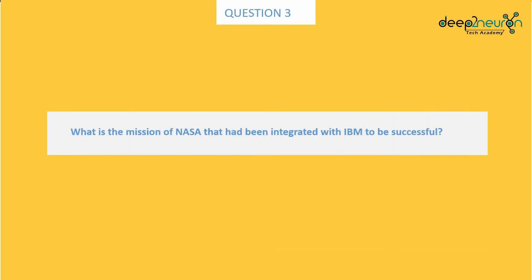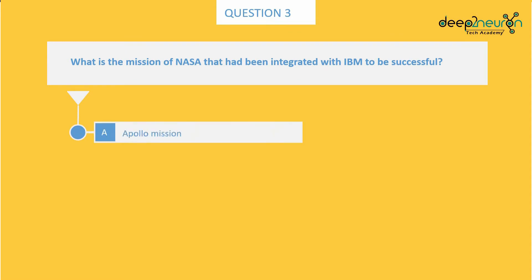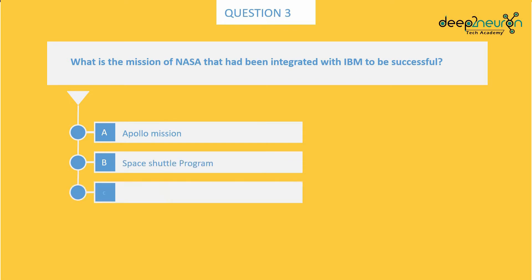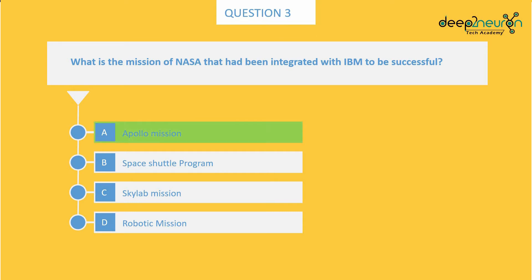Question number 3: What is the NASA mission that IBM was integrated with to be successful? Option A: Apollo Mission. Option B: Space Shuttle Program. Option C: Skylab Machine. Option D: Robotics Mission. The right answer is Option A, Apollo Mission.